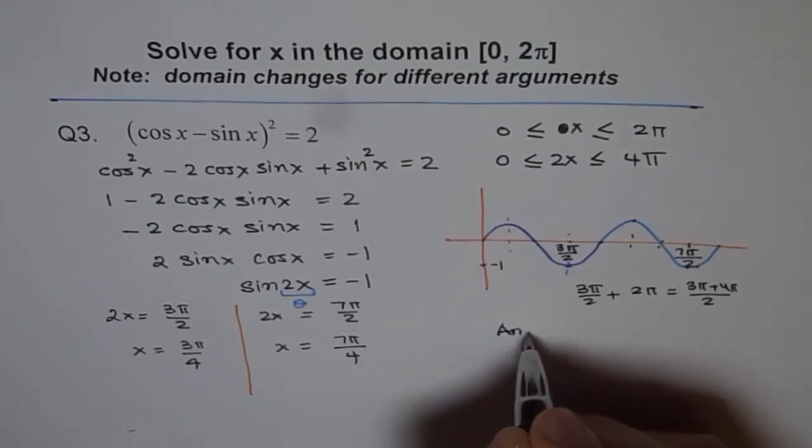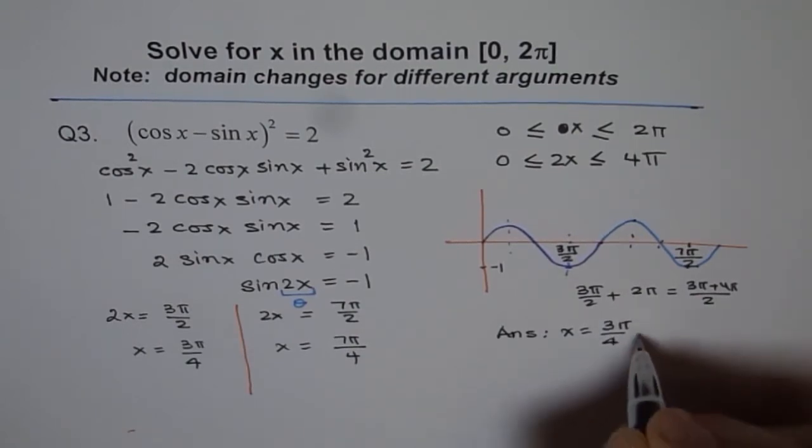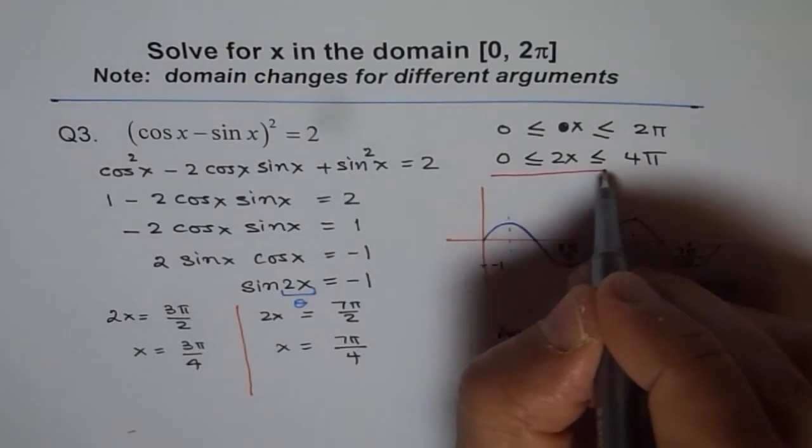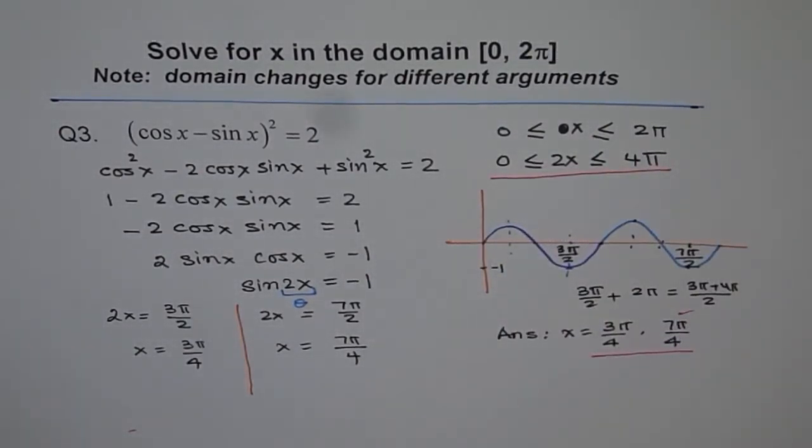Therefore, we can write down our answer as x = 3π/4 or 7π/4. If you don't really consider this part which we did here, then you will miss on the second answer. And you lose half the marks. So it is very important to understand the domain when the argument changes, the domain changes, and then solve the equations. I hope you appreciate it. Thank you.